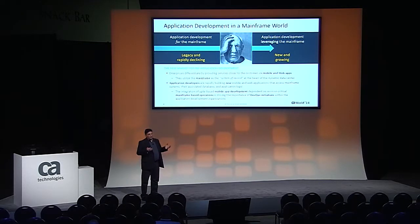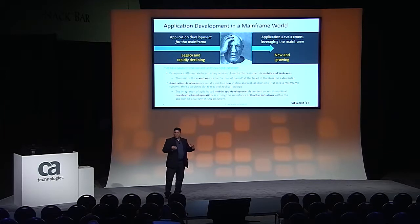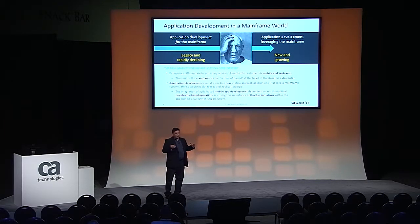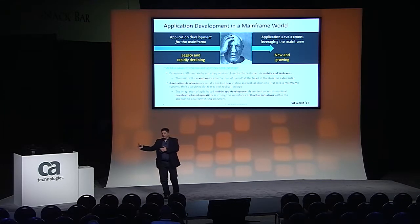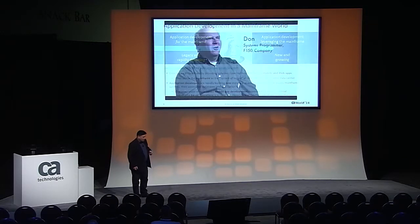I was in about six or seven one-on-one meetings this morning, and every one of them told me the same problem: we've been using CA products for a long time on the back end, we've used Endeavor to maintain our code, but we don't know how to take that information and make it accessible to the front end — to our Java developers, our Xcode developers. And that's really what we're going to talk about today.